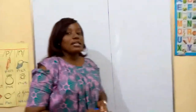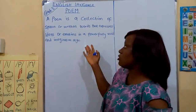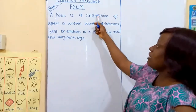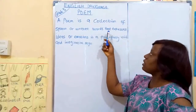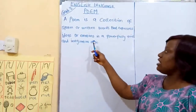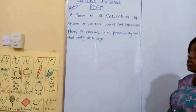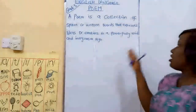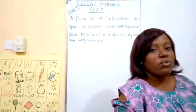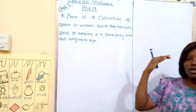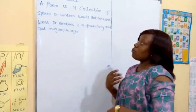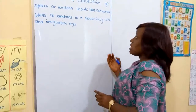What is a Poem? A poem is a collection of spoken or written words that expresses ideas or emotions in a powerfully vivid and imaginative style. Vivid means having a clear picture of something. Imaginative style means you can sit down and begin to imagine what the writer is talking about. So a poem is a collection of written or spoken words that expresses ideas.